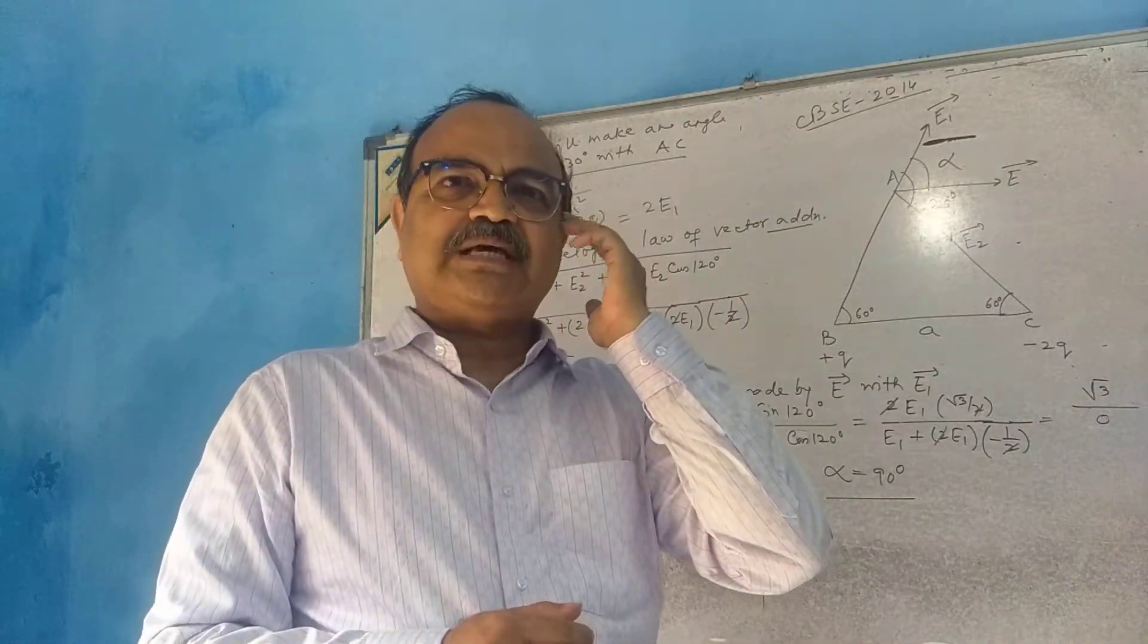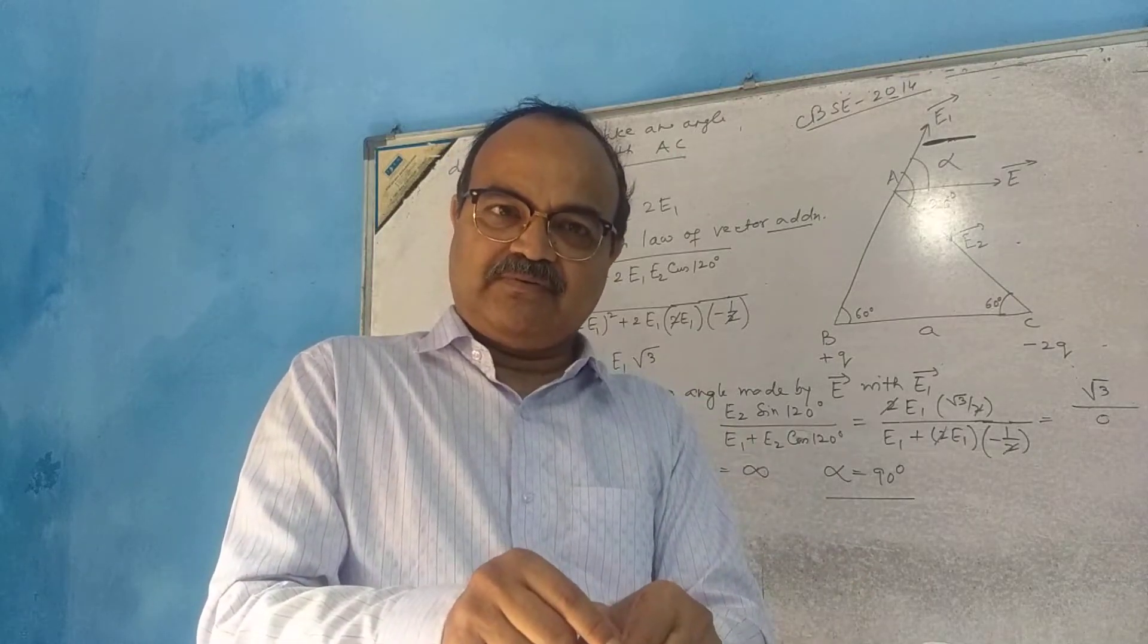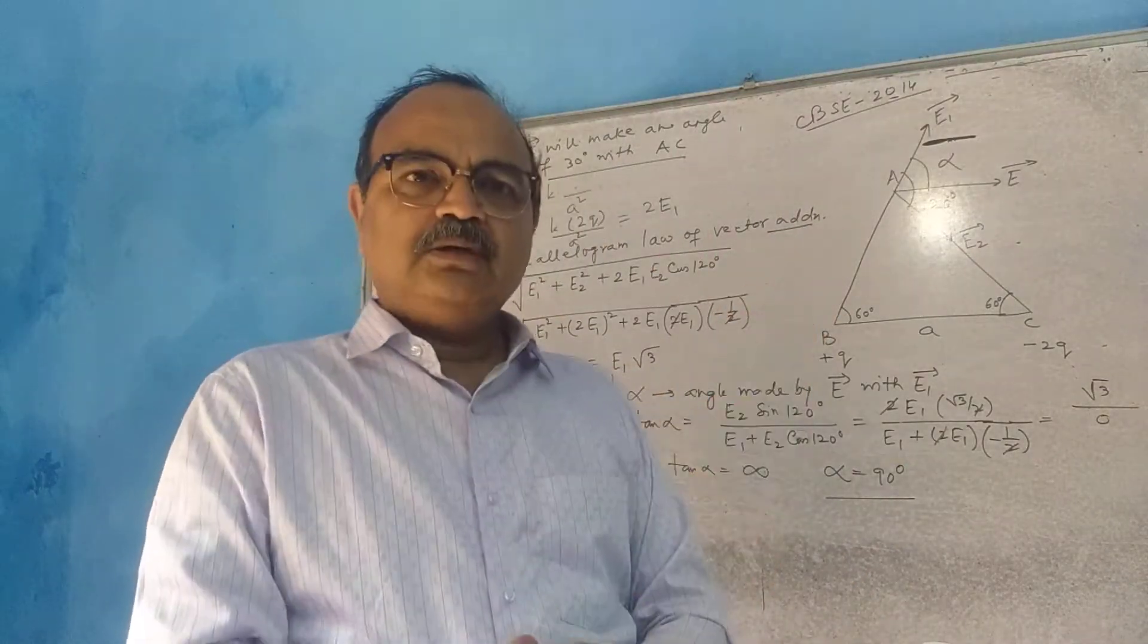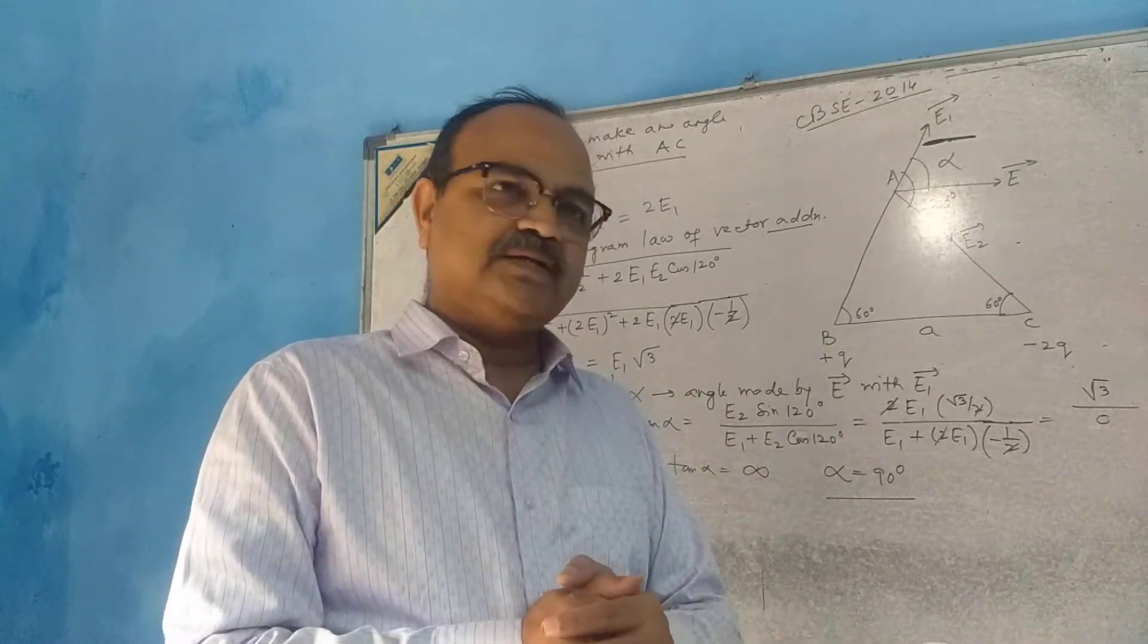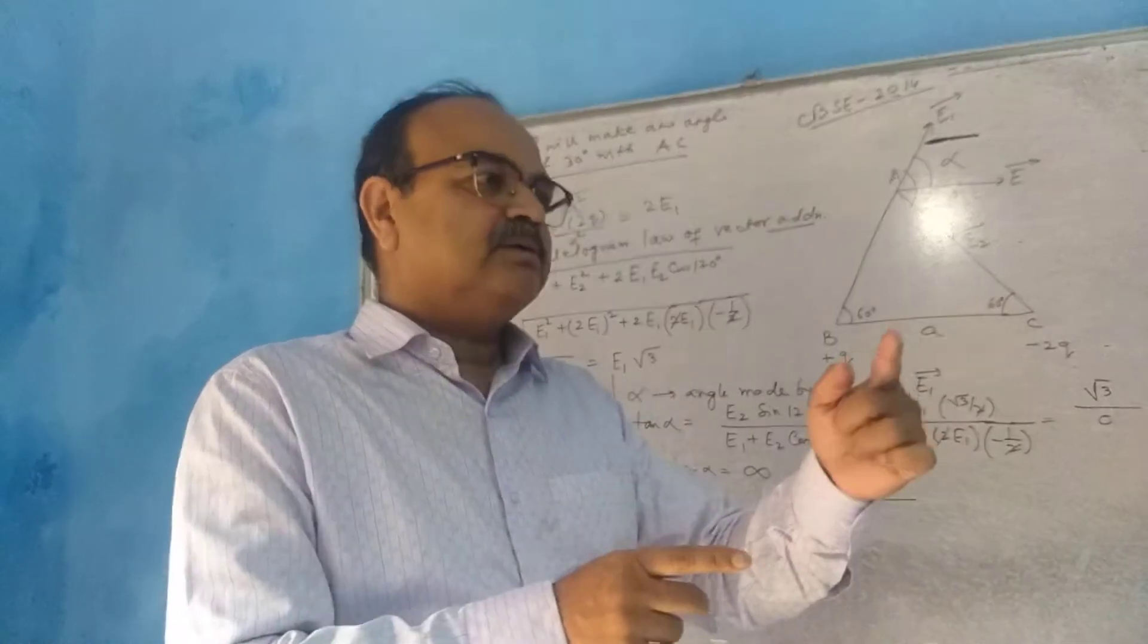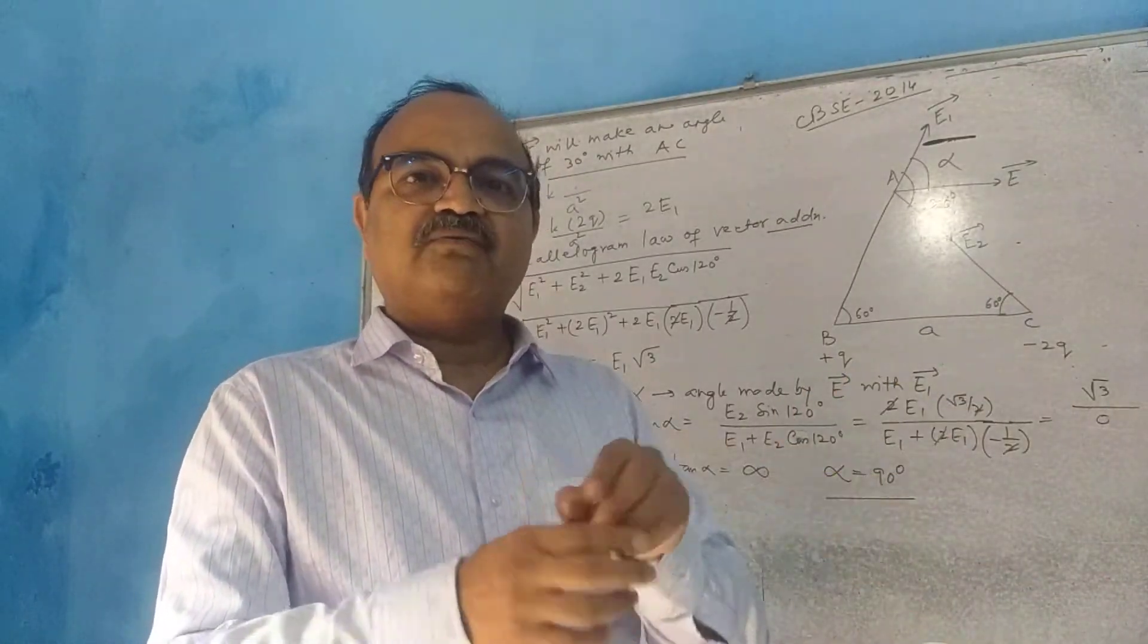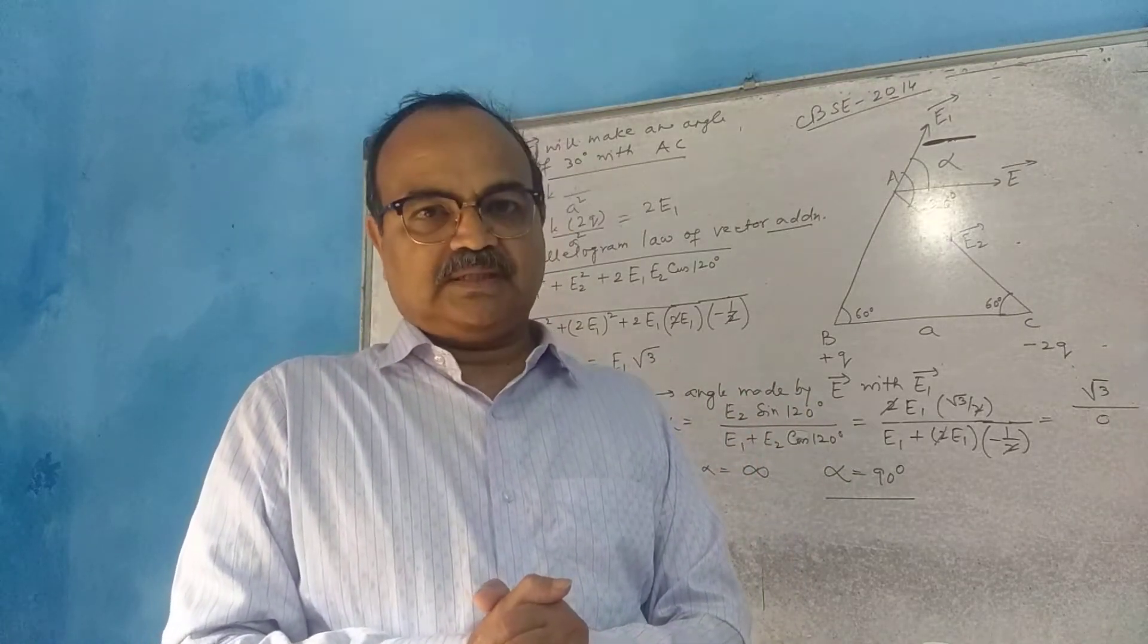Especially if the charges are placed along vertices of a triangle or along a line like this. Then in the next class, I will be discussing the question on square. If the charges are placed on the vertices of the square, then what will happen we shall discuss that.